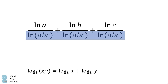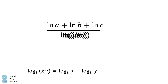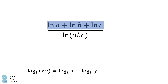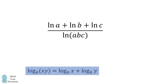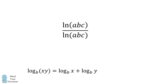Now each of these three fractions have the same denominator — the natural log of the product ABC. Thus, we can sum them and combine the numerators. It becomes the natural log of A plus the natural log of B plus the natural log of C, all over the natural log of the product ABC. We then use the product rule one more time: the natural log of A plus the natural log of B plus the natural log of C equals the natural log of ABC. This simplifies to the natural log of ABC over the natural log of ABC, which equals 1.